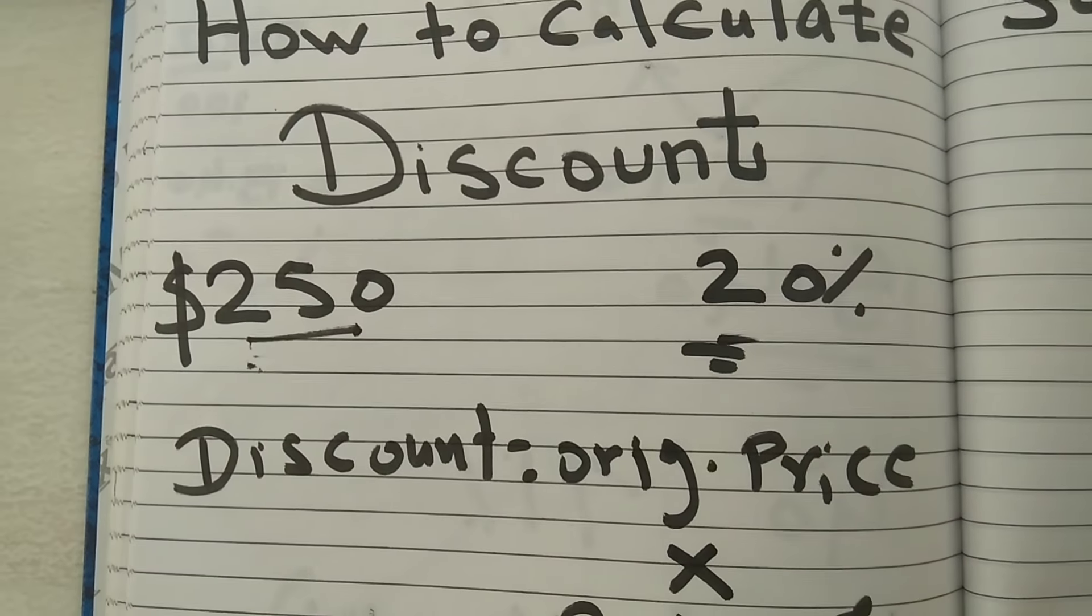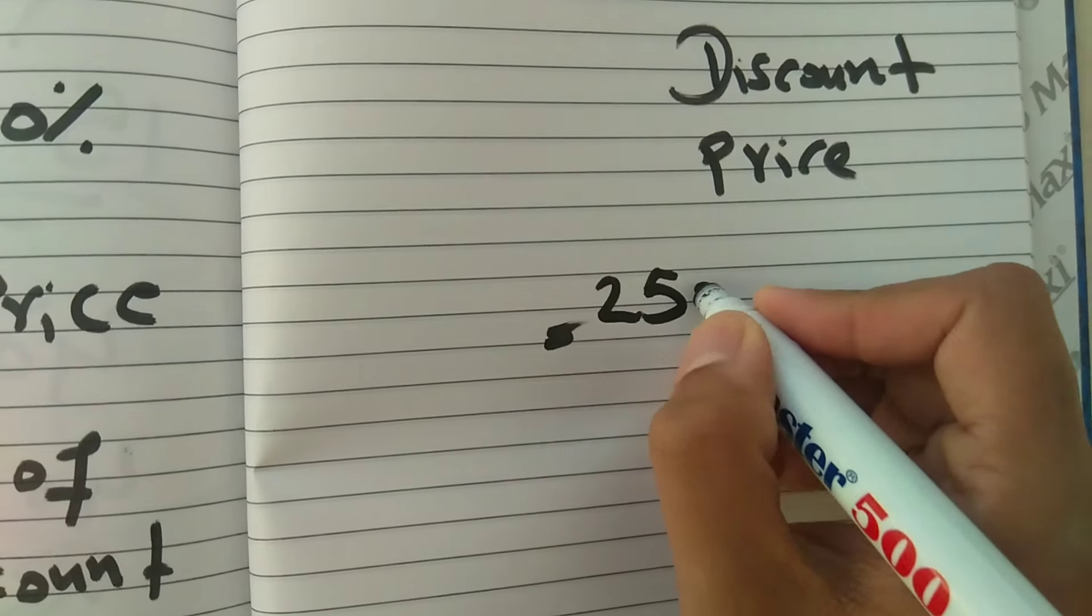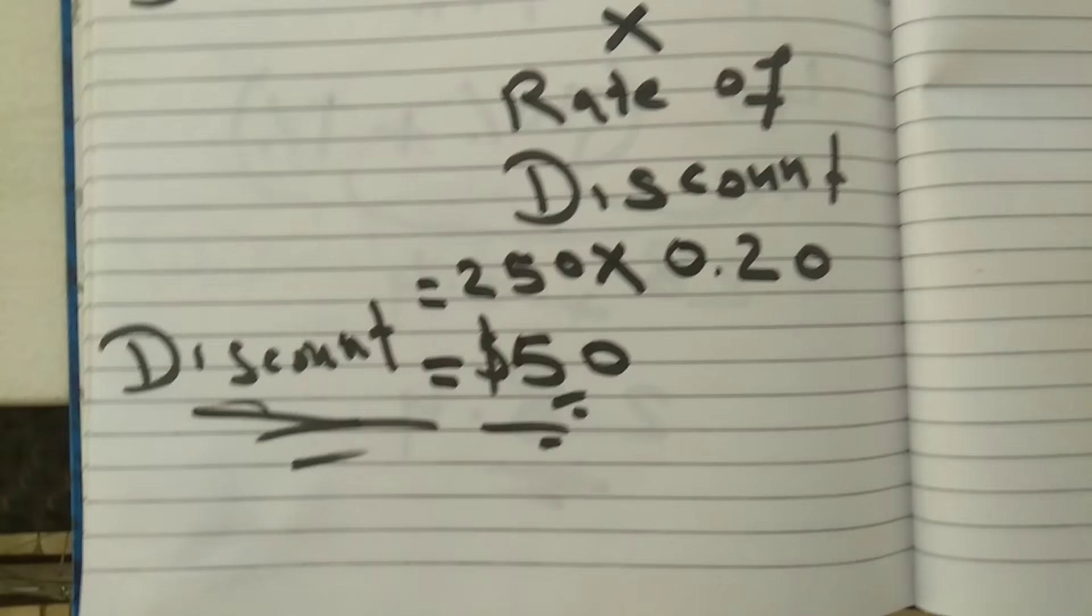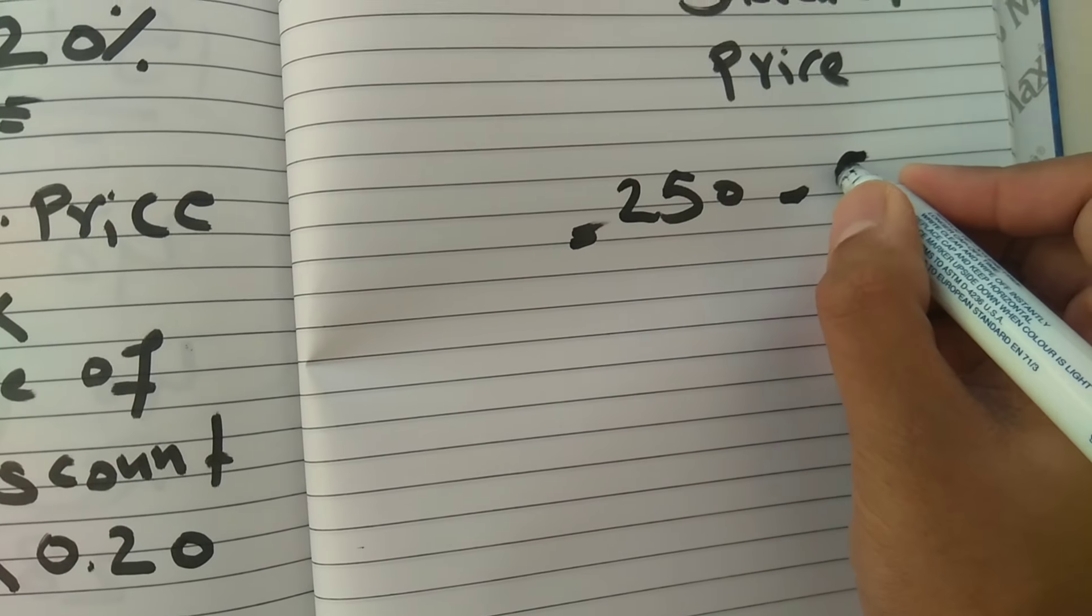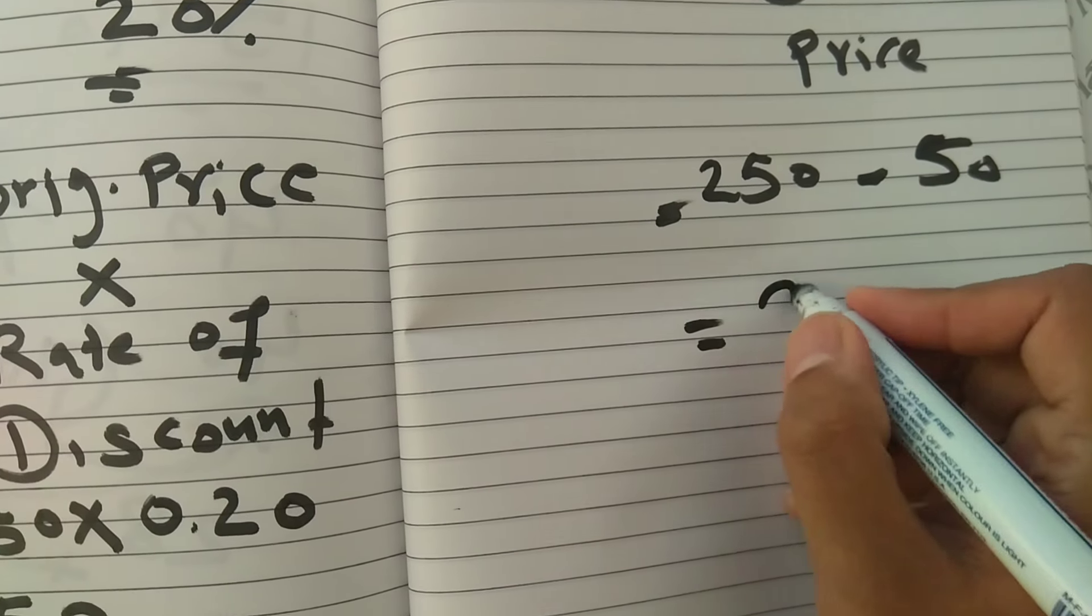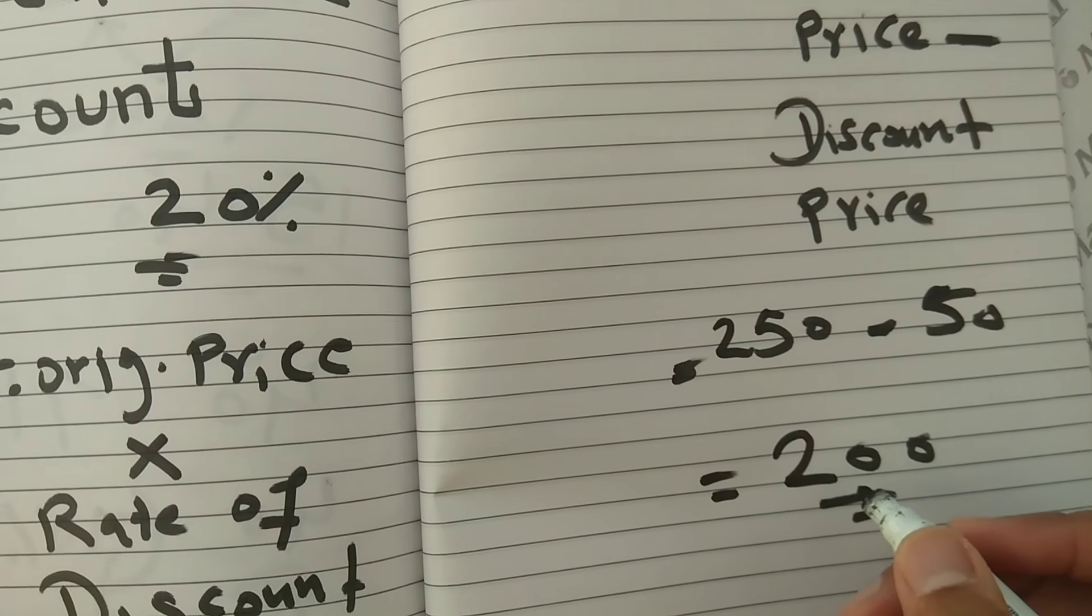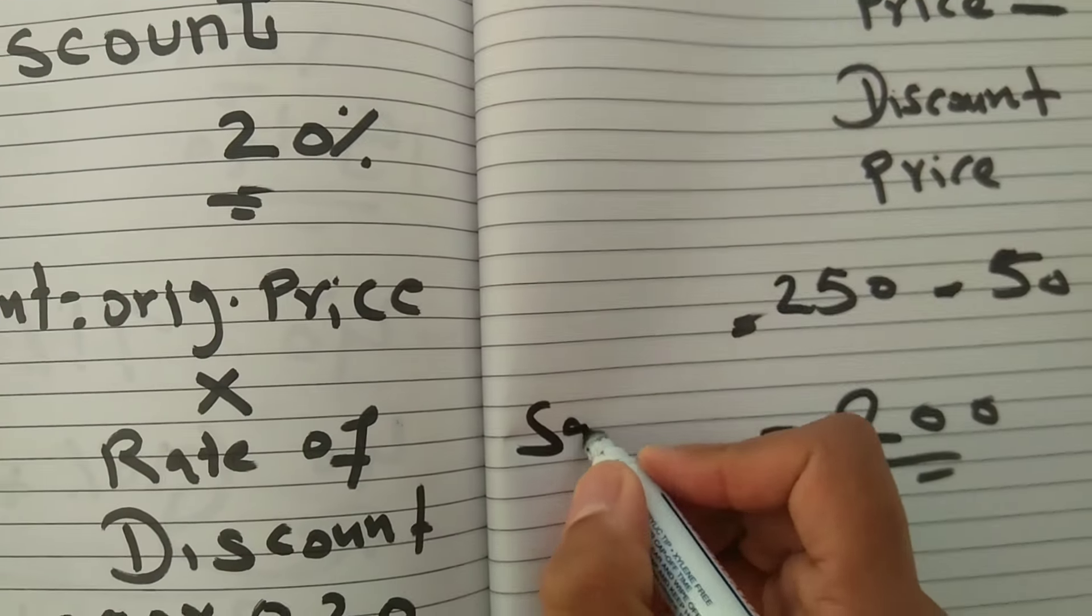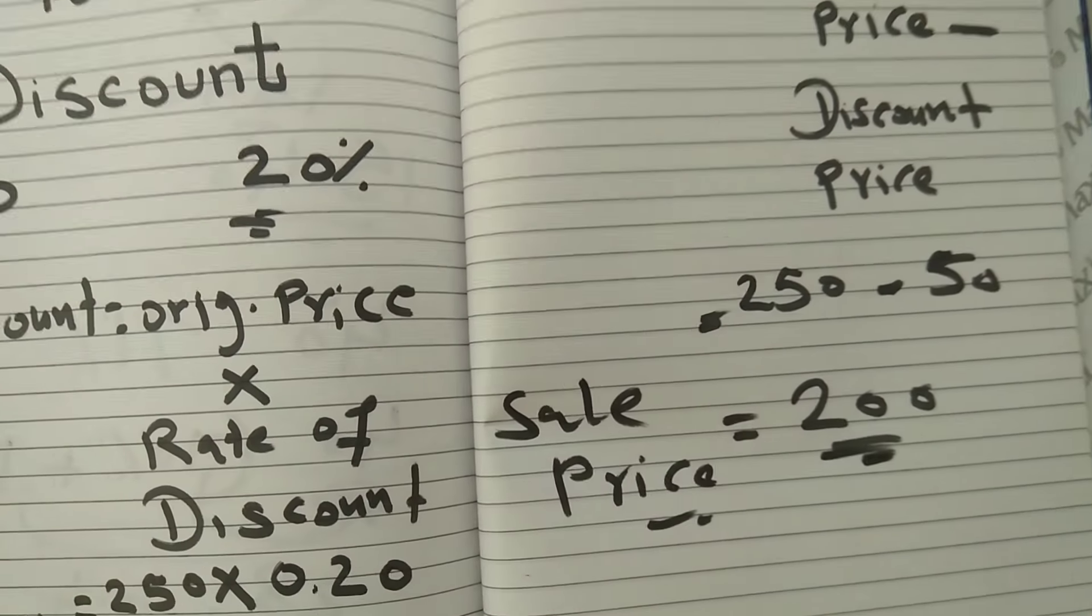$50. So $250 minus $50—the sale price will be $200. That's the formula for sale price: sale price equals original price minus discount price.